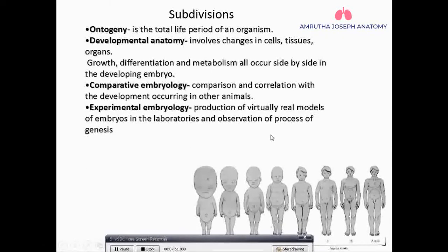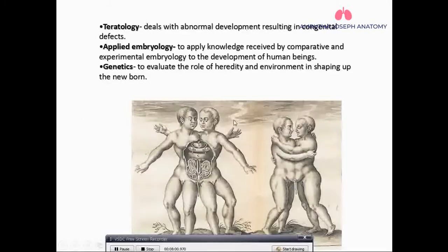Experimental embryology involves making real models of embryos in the laboratory and observing the process of genesis. Teratology deals with abnormal development resulting in congenital defects — for example, as seen in this diagram showing conjoined twins where the thorax and abdomen are joined.